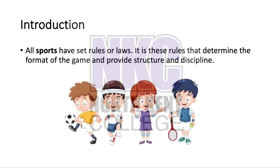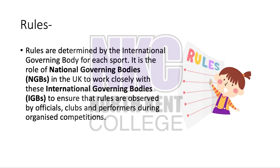All sports have a set of rules or laws — it is these rules that determine the format of the game and provide structure and discipline. Rules are determined by the international governing body of each sport. It is the role of the national governing body in the UK to work closely with the international governing bodies to ensure that rules are observed by the officials, clubs and performers during organised competitions.